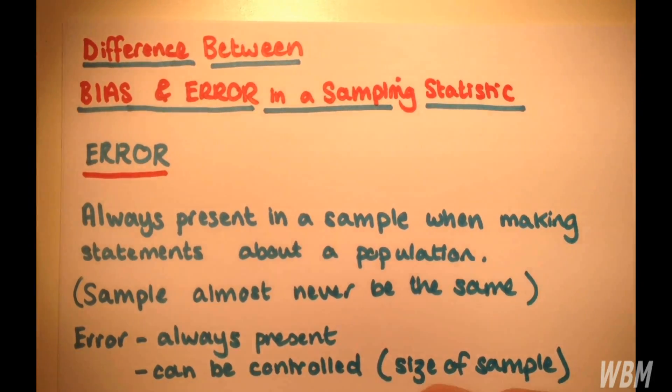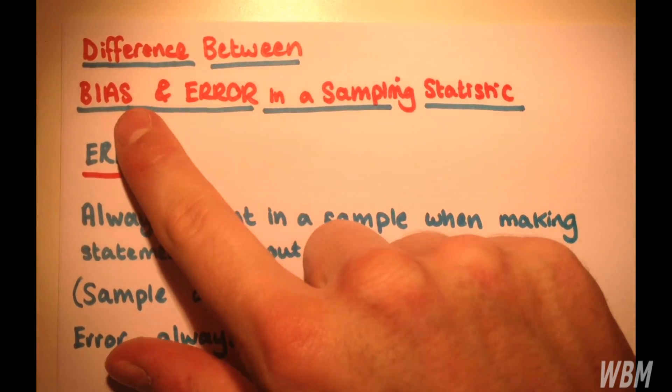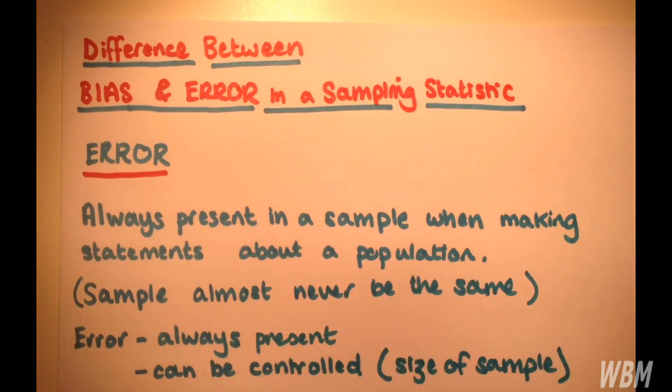This is a very quick overview of the difference between bias and error in a sampling statistic.